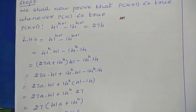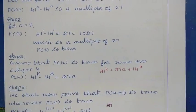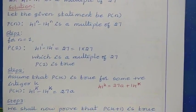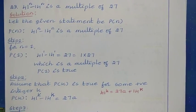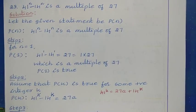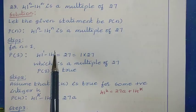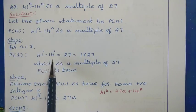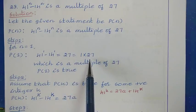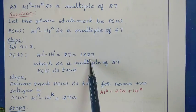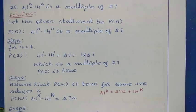Next we discuss Question 23: 41 to the power n minus 14 to the power n is a multiple of 27. Let P of n be the given statement. The first step is to check the statement for n equals 1: P of 1 gives 41 minus 14, which is 27. Since 27 is 1 into 27, it is a multiple of 27, so the statement is true for n equals 1.